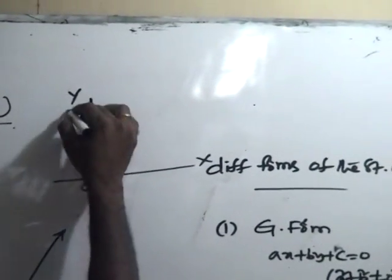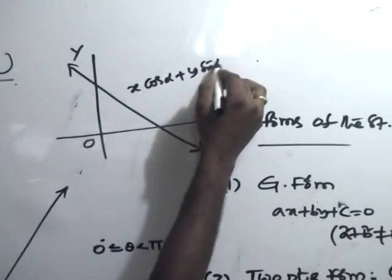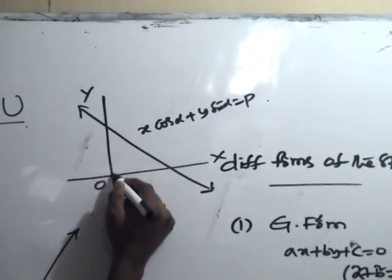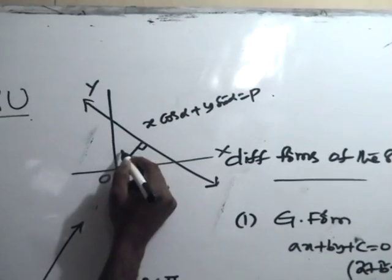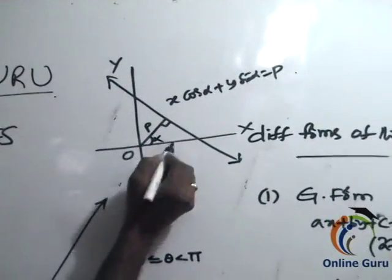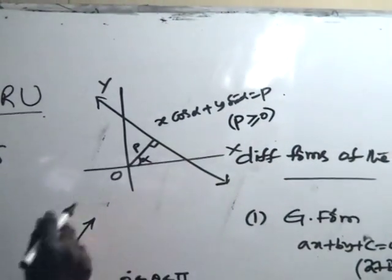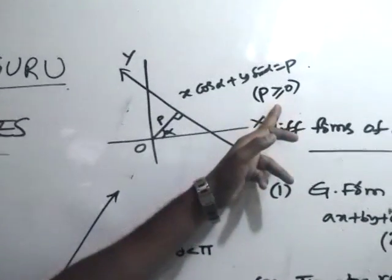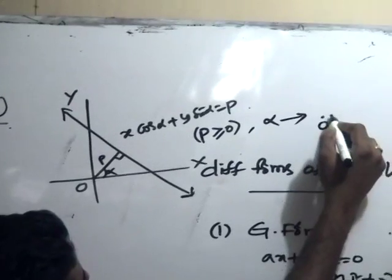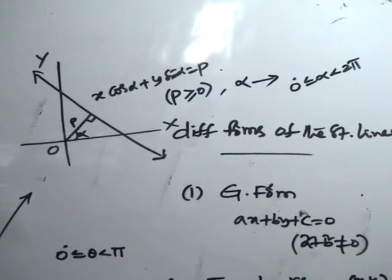In the normal form, the straight line is drawn, and p represents the perpendicular distance from the origin to the line. Alpha is the angle made by this normal with the x-axis in the positive direction. Here p ≥ 0 since it denotes a distance, and alpha satisfies 0 ≤ alpha < 360° (i.e., 2pi).